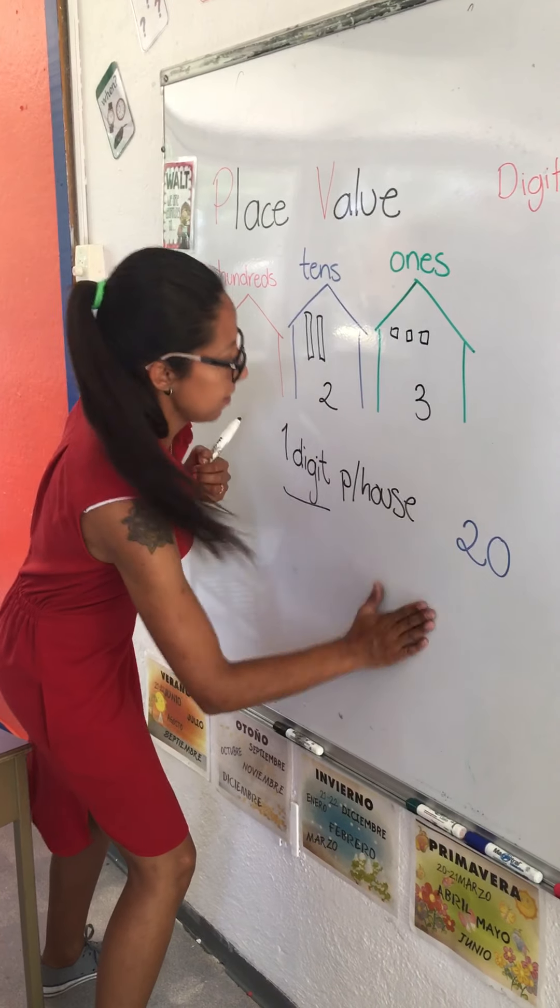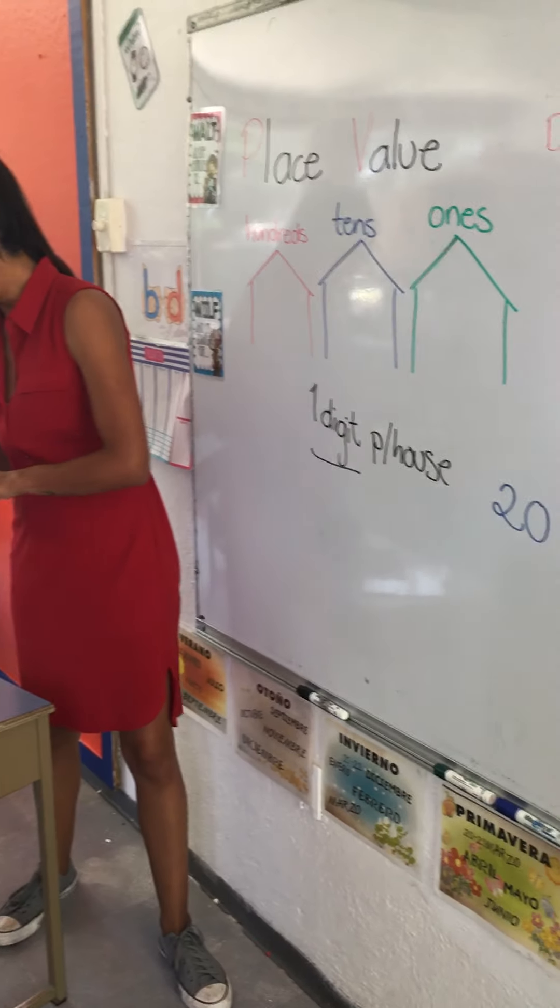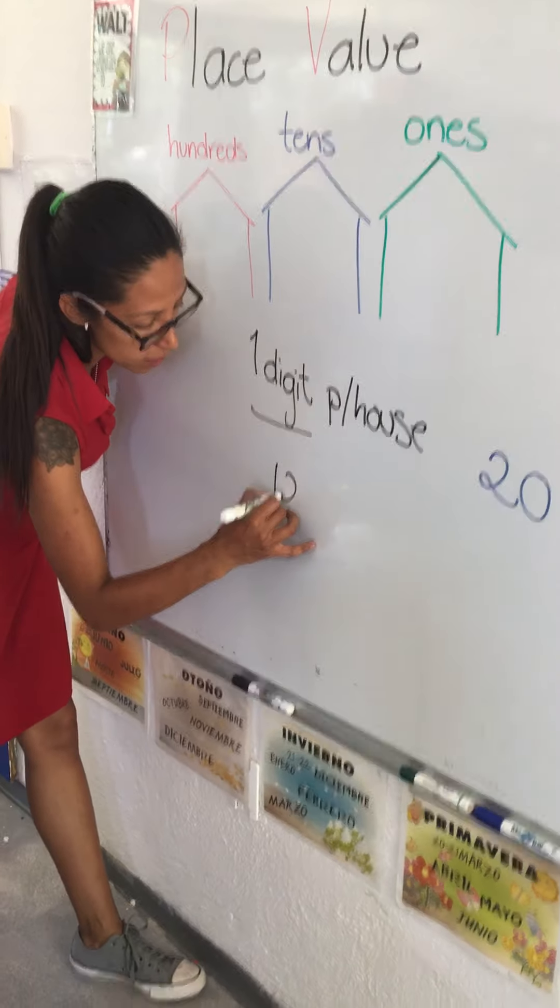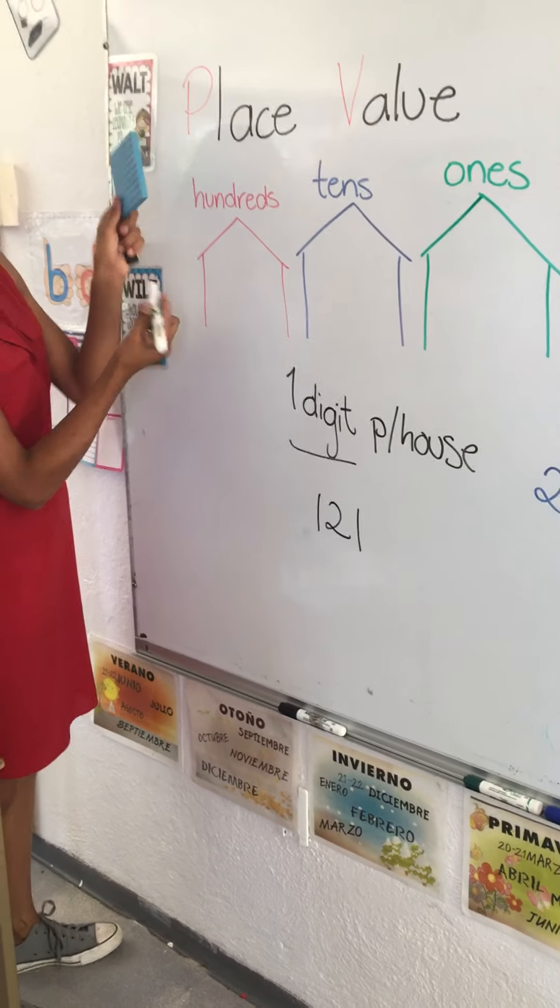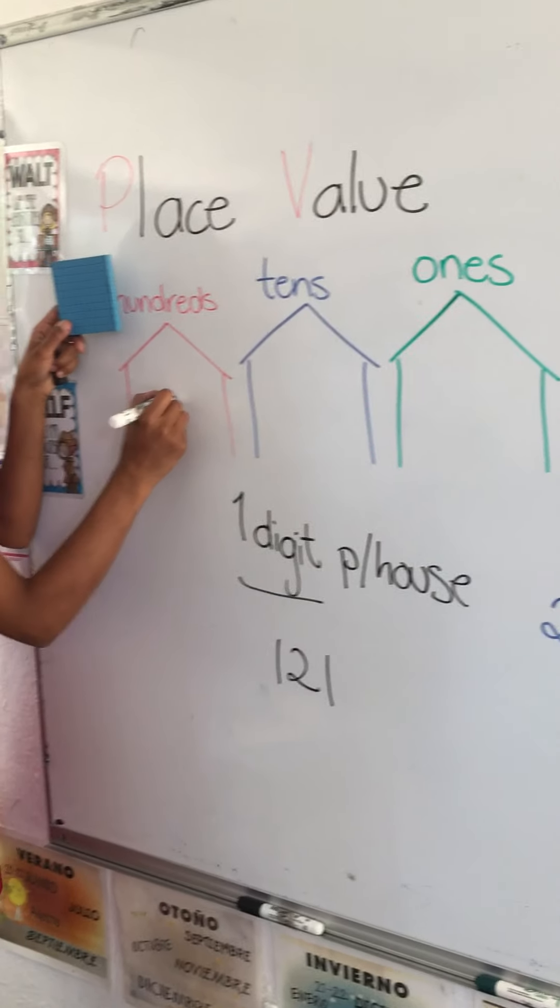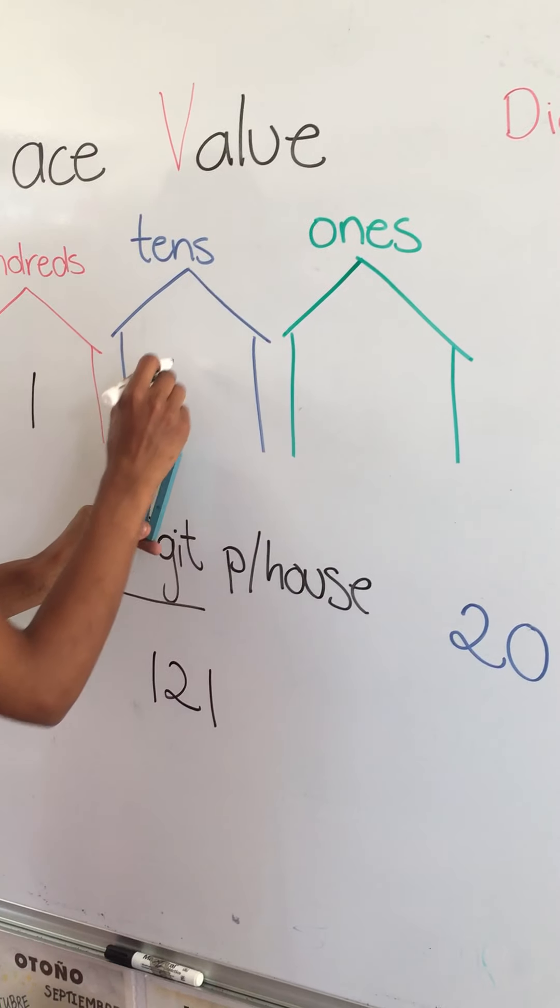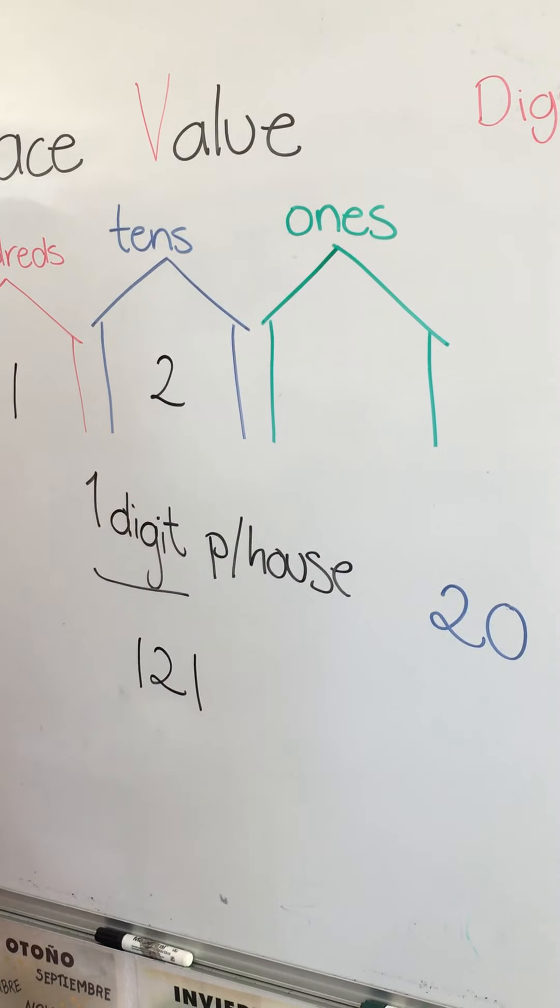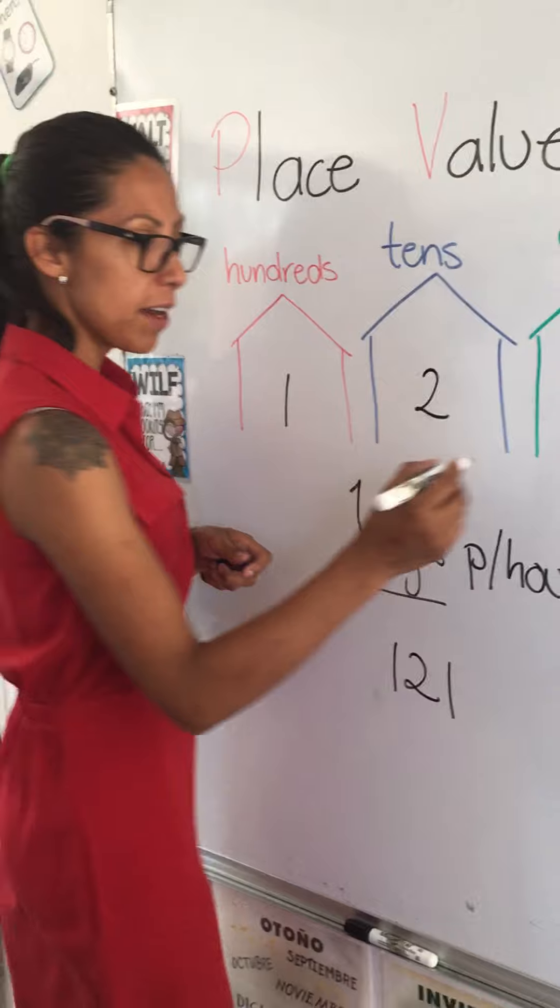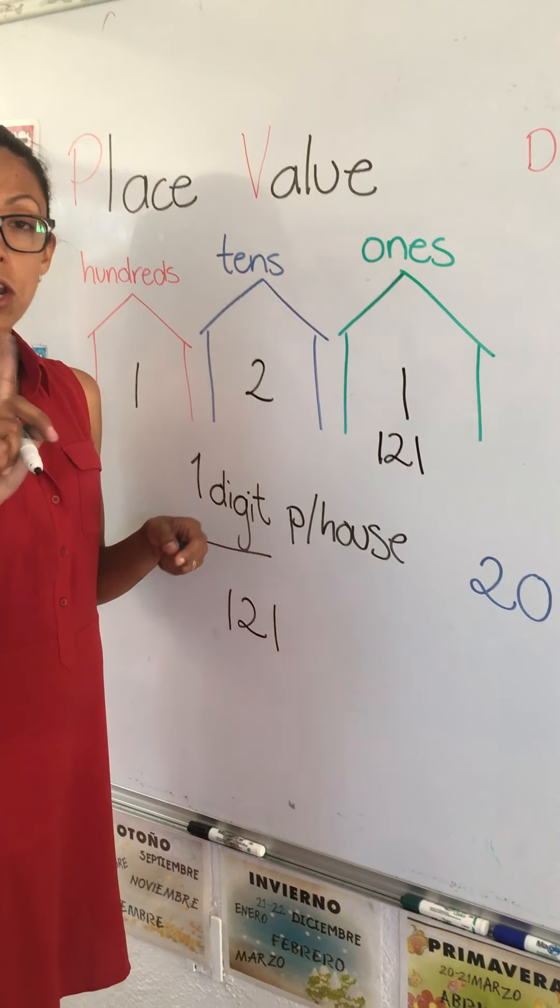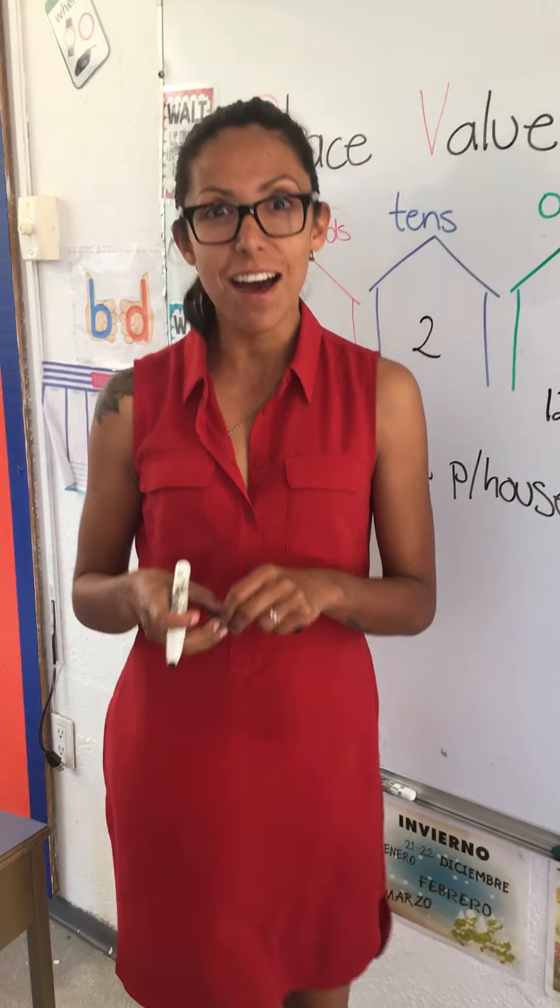The last one. What would happen if we have the number 121? So we would have one hundred. That is called hundred because it has one hundred. How many tens? Two. And how many ones? One. One hundred and twenty-one. Would it be okay if I write here one hundred and twenty-one? No, because we need just one digit per house.